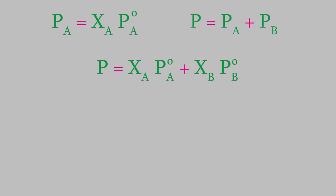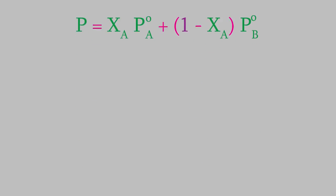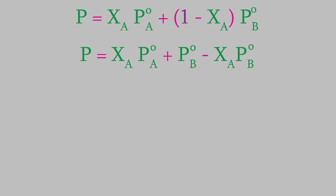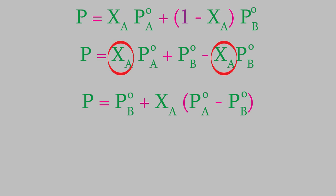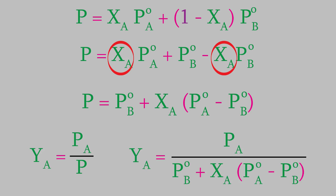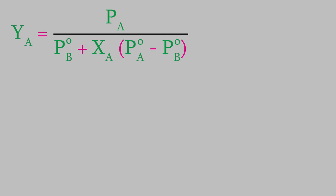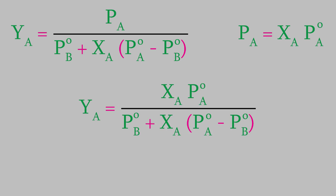First, let's use Raoult's Law to rewrite the equation for the total gas pressure. Also, since there are only two compounds in the solution, we know that the mole fractions of the two will add up to 1, so Xb is equal to 1 minus Xa. If we plug that into our equation, here's what we get. Now let's distribute Pb to the term in parentheses. Notice that two of these terms include the mole fraction of compound A, so let's factor that out of those two terms. We can plug that expression for the total pressure into the equation we got earlier for the mole fraction of compound A in the vapor phase. That gives us this rather large fraction. We can also rewrite the numerator of this fraction using Raoult's Law. So this equation gives us a way of determining how much of the vapor phase above a solution is a result of compound A.